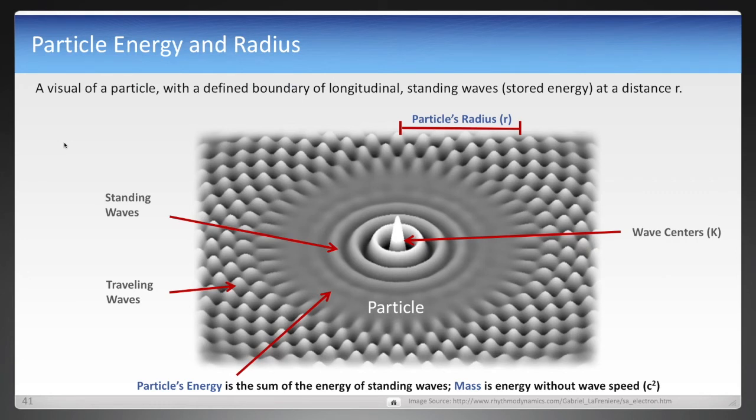This is a visual now of what a standing wave would look like. In the middle you see a wave center and a particle that has standing waves until the point where it has to transition—those little tiny bumps that you see beyond that, which are traveling waves. And so that point at which it does the transition becomes a particle's radius, and everything that's in the middle there as standing waves becomes the particle's rest energy, or is also considered to be mass, and mass is simply just energy without the consideration of wave speed.